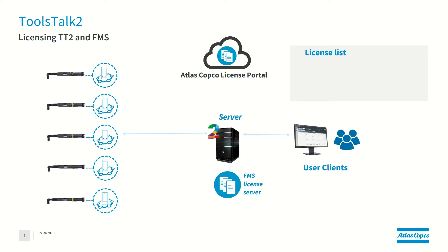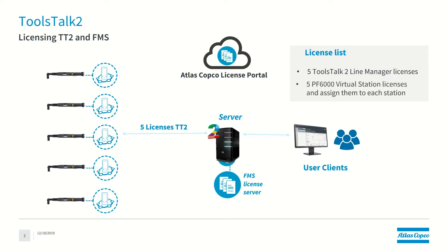This is a brief overview of what we're going to do today. We're going to license Toolsock 2 and FMS. For user clients to be able to connect to the controllers, we'll need licenses for Toolsock 2. We're going to download five Toolsock 2 Line Manager licenses, meaning five virtual stations could be connected to the server. Then we're going to make sure our PS6000 has additional virtual stations — we'll download five PS6000 virtual stations and assign them to each of the five stations.